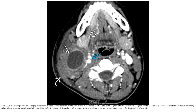This is a contrast-enhanced CT in a teenager with a large smooth cystic lesion in the typical location of a second BAC — posterior to the submandibular gland, anterior to the SCM, and lateral to the carotid space vessels. Note the thick irregular rim and adjacent soft tissue edema, consistent with superimposed infection and cellulitis or myositis.